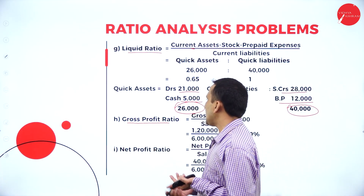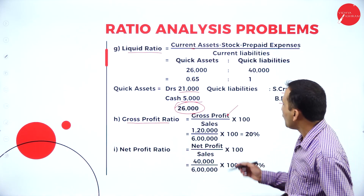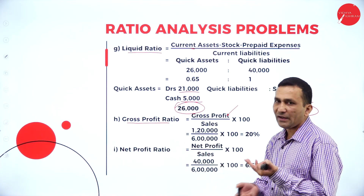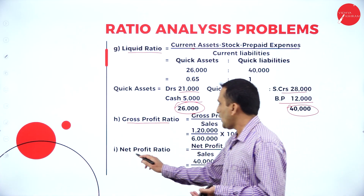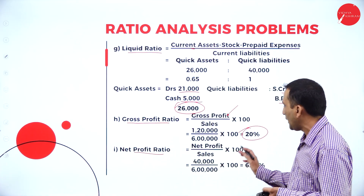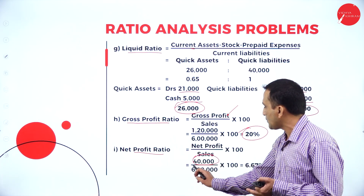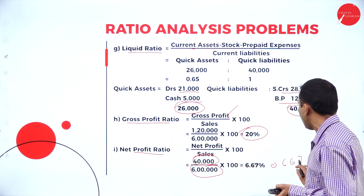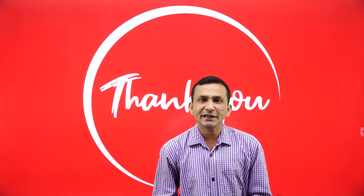Moving to gross profit ratio: gross profit 1,20,000 divided by sales 6 lakh gives 0.2 or 20%. Net profit ratio: net profit 40,000 divided by sales 6 lakh gives 0.067 or 6.67%. Keep watching for the next section. Thank you.